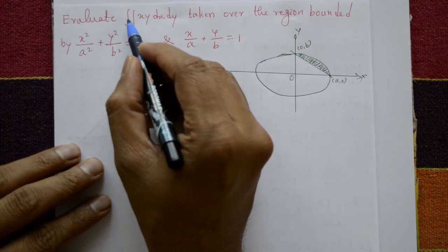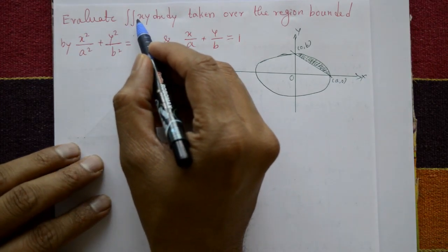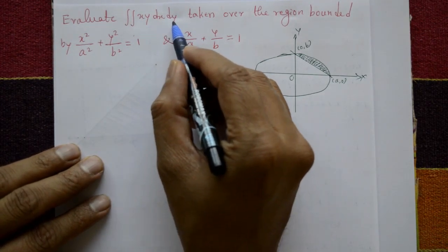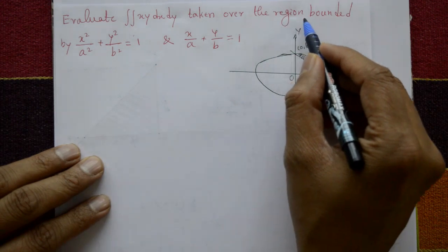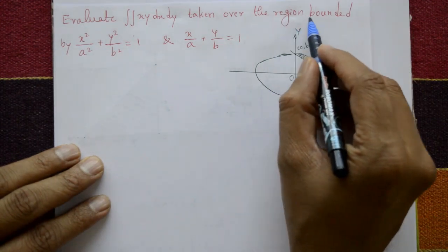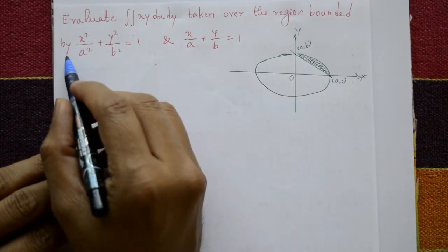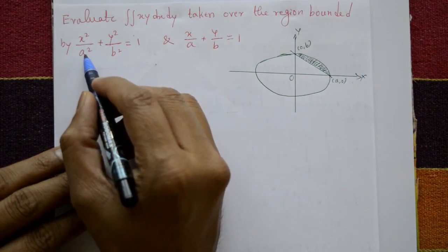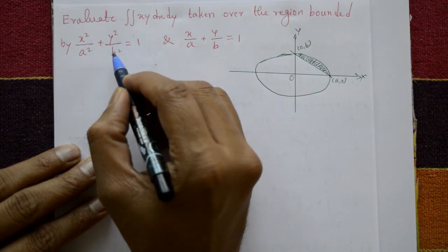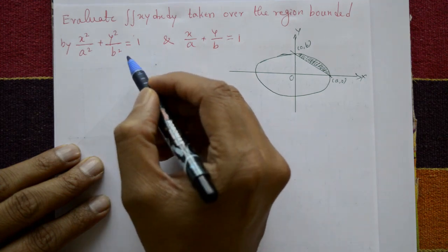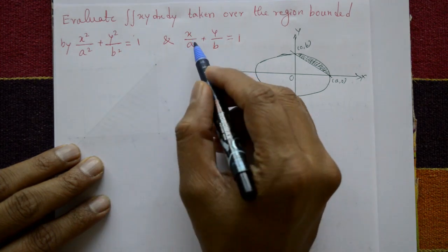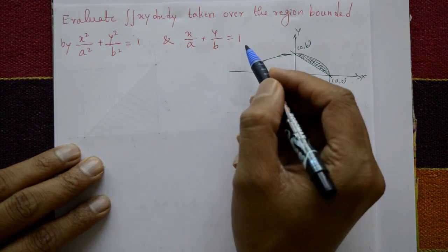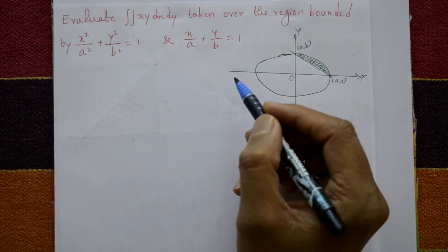Evaluate the integration of xy dx dy taken over the region bounded by x²/a² + y²/b² = 1 and x/a + y/b = 1.